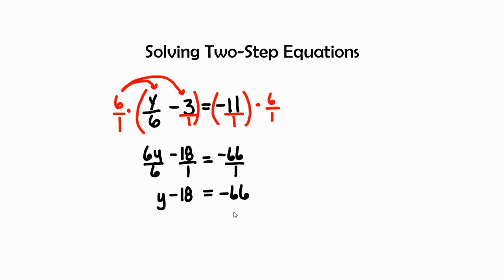Let's just do our one-step equation. Here we have negative 18. To get rid of that, I'm going to have to add its inverse. So, positive 18 to both sides.